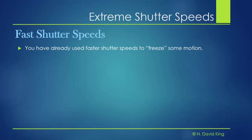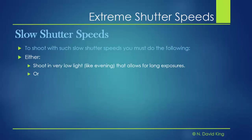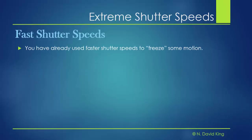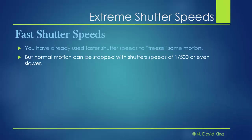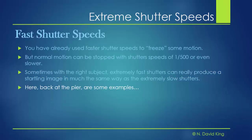But suppose we want to use very fast shutter speeds and go the other way. You've already used faster shutter speeds to freeze some motion, but normal motion you can stop with a 1/500th of a second or even slower. Sometimes, with the right subject, an extremely fast shutter can produce a startling image that's as different from reality as what we saw with the very slow shutter speeds. Let's get back to the pier and check out some examples of how that might work.